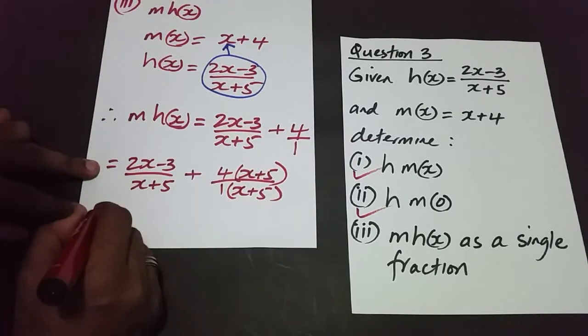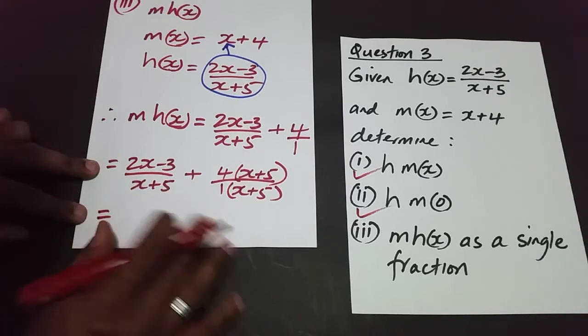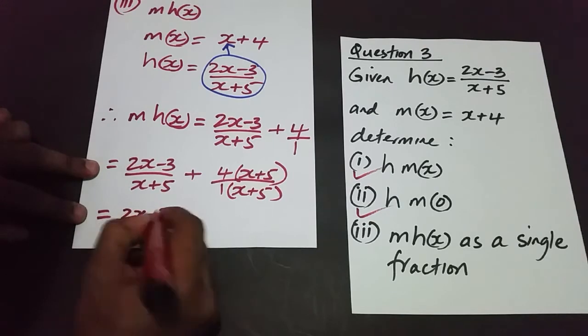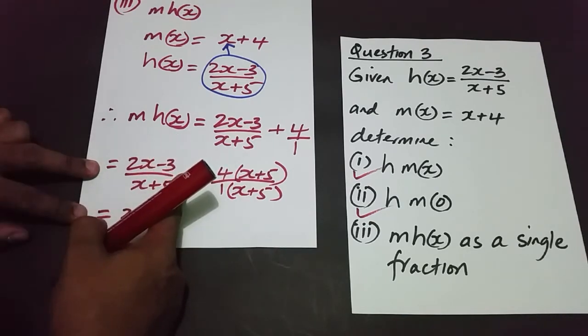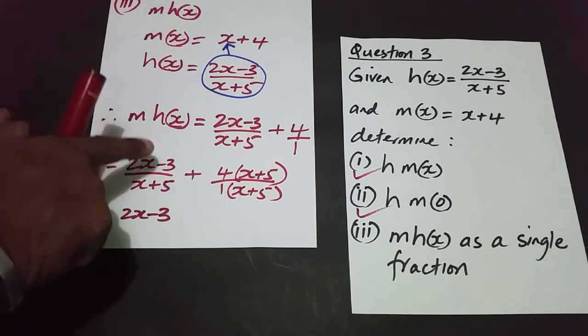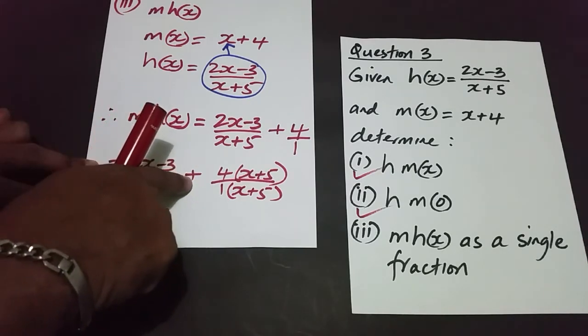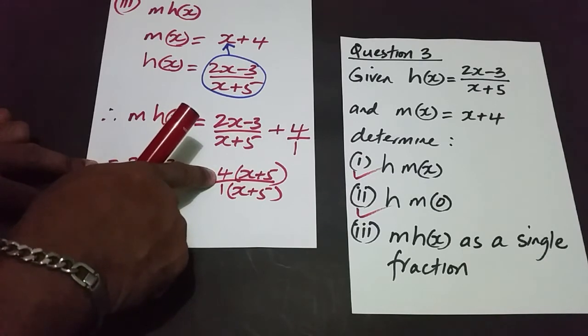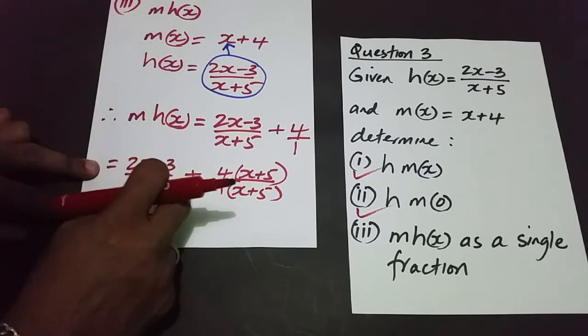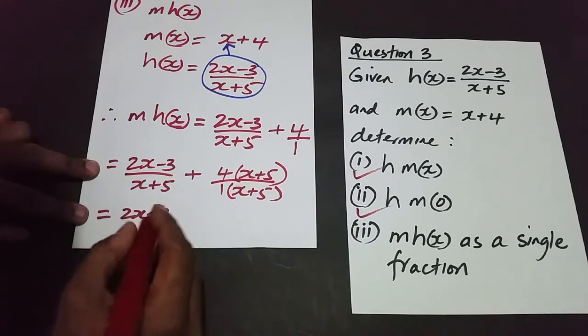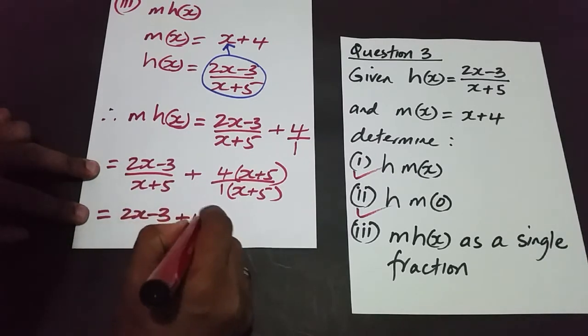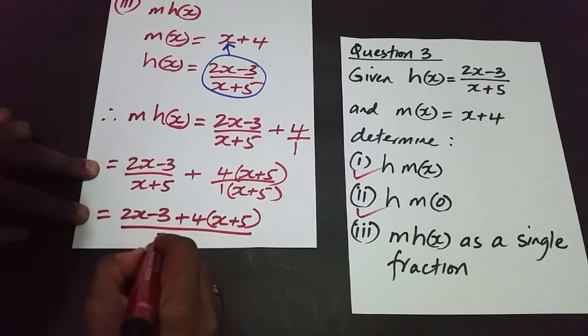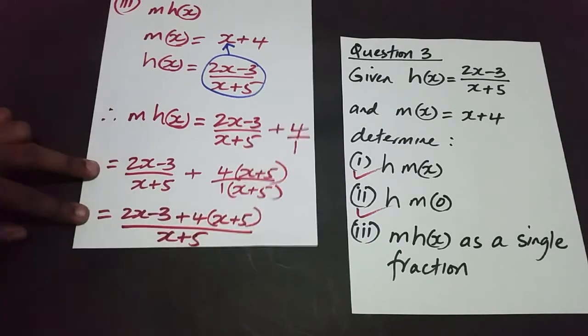And again, establish the single fraction before expansion, that is advised. In this particular case you can get away because this is a positive. If it were a negative, there's a tendency sometimes to forget that the minus sign, if it was a minus sign, that this sign here is attached to the 4, and then you make mistakes here especially when you have a negative sign. In this particular case you would have gotten away with it.